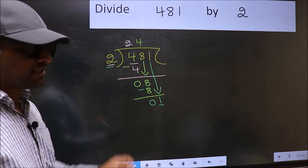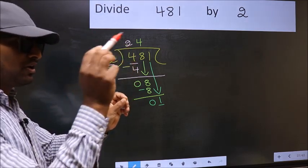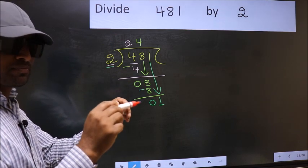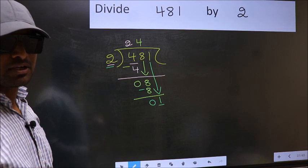I repeat: bringing the number down and also putting a dot and taking 0, both at the same step—you are not supposed to do this.